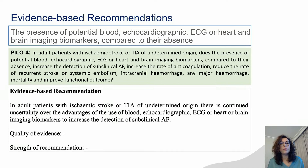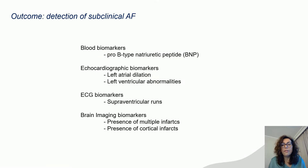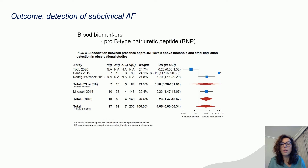Our fourth PICO was aimed at the presence of potential blood, echocardiography, EKG, or heart and brain imaging biomarkers compared to their absence. In this case, we consider that there is not enough evidence to provide a recommendation. We studied different potential biomarkers, mainly obtained from subanalysis of different prolonged monitoring studies. However, they are detected at a higher rate in patients with subclinical AF, but they are not actually good biomarkers for this detection.